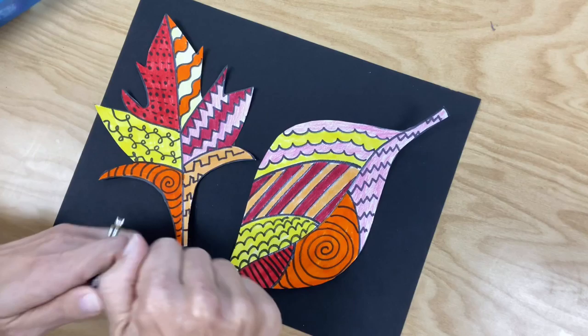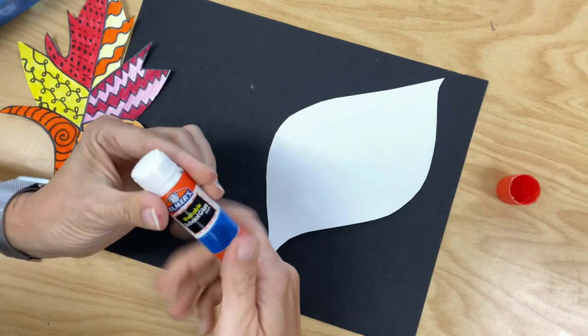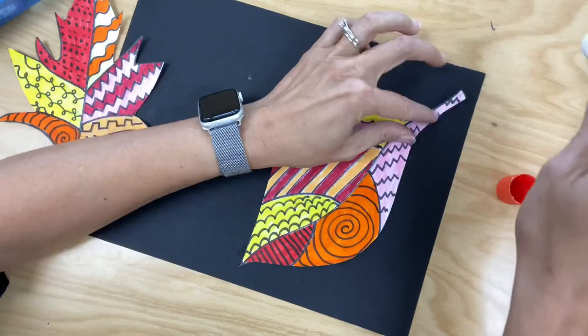It is your choice on how you want to glue them down. I would just make sure they don't overlap, but they can both be going up, they can both be facing down, one's going up, one's going down, that is up to you.